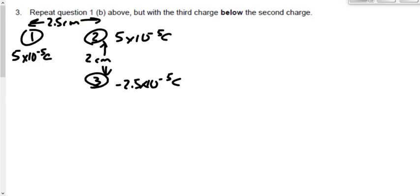Taking a look at worksheet number seven, question number three, which is the first of two questions we had for homework last night. It says repeat question one B above, but with the third charge below the second charge. All I've done is effectively drawn the diagram as it's supposed to be drawn. I haven't drawn the free body diagram showing the forces. We'll do that together.